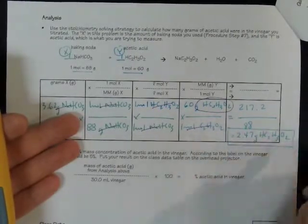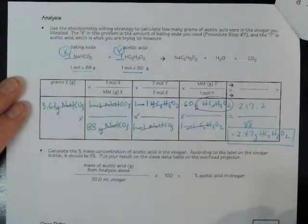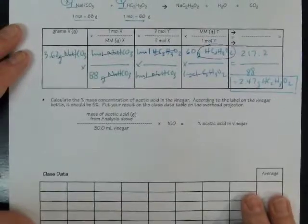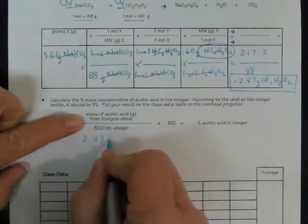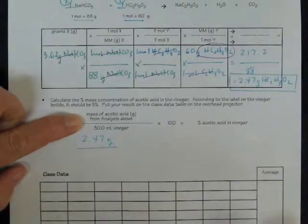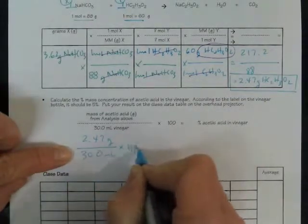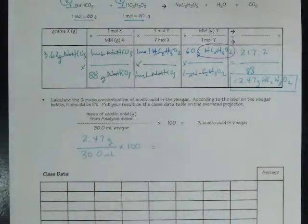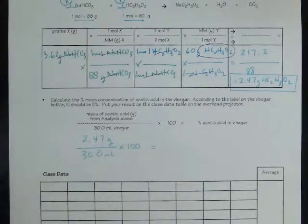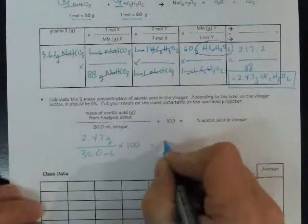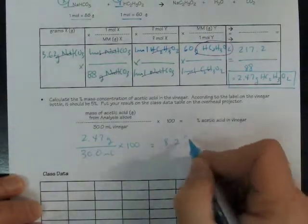So that's how many grams of acetic acid were in the cup of vinegar that I titrated. Let's turn that into a percent so we can compare it to what it says on the bottle. I'll take the mass that I just found of the acetic acid. 2.47 grams. And the amount that was put into the cup was 30 milliliters. So I'll put that on the bottom. I'm going to multiply by 100 to make it a percent. And do the calculation. And it says 8. I'm going to say 8.2% there. 8.23%.